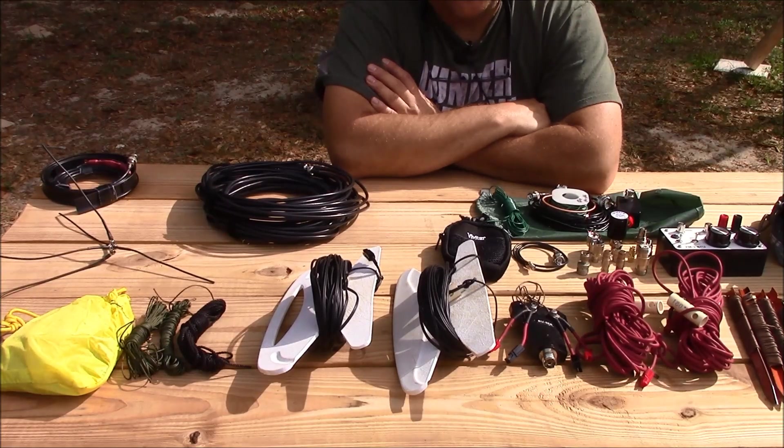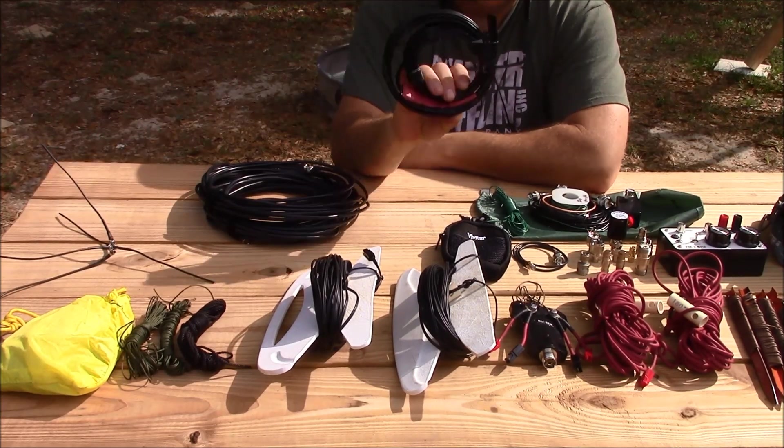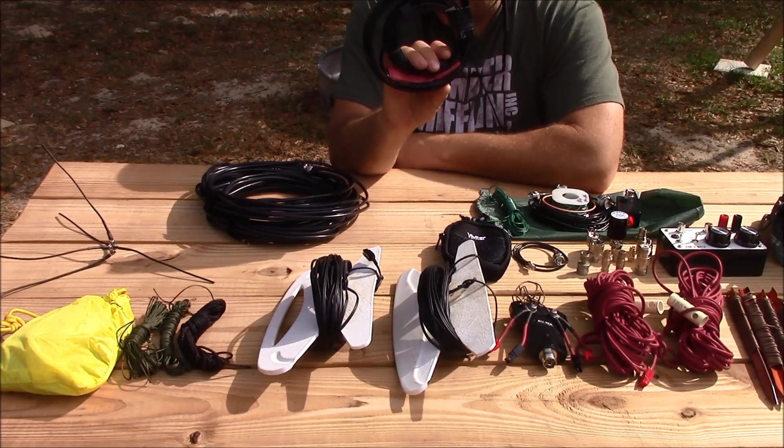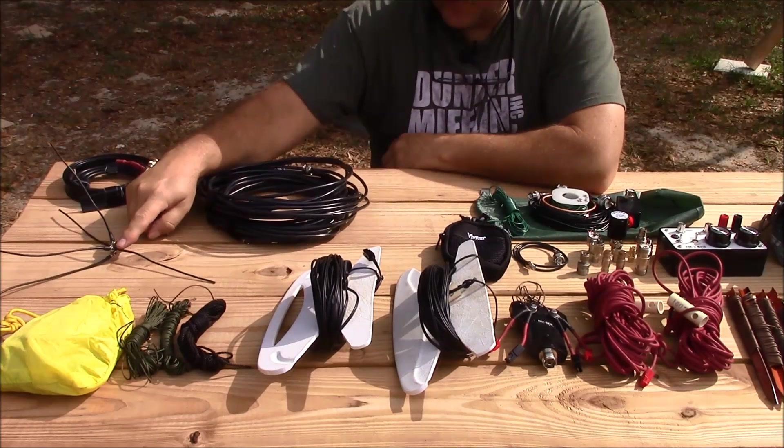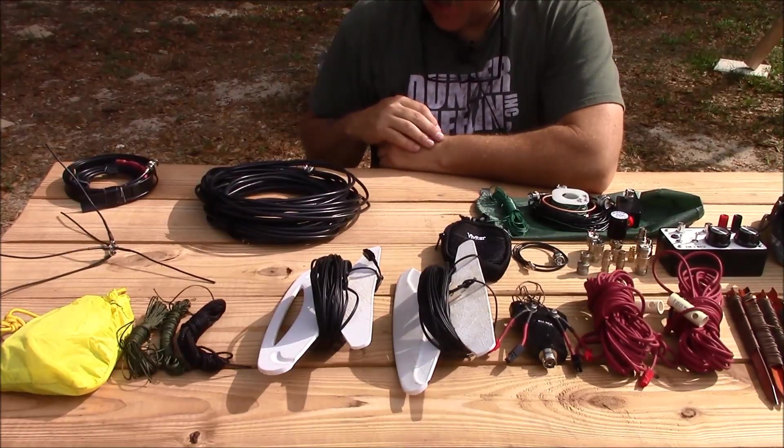These are the contents of my antenna bag laid out for display. This is a VHF UHF roll-up J-Pole antenna. I have a video on my channel on how to make this yourself, and this is a UHF ultralight ground plane. I also have a video on my channel for that.